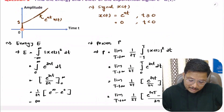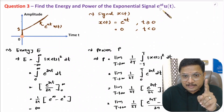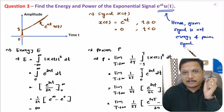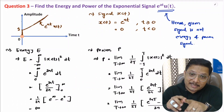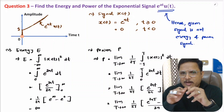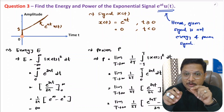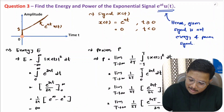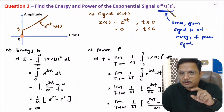This means the given signal e to the power at times u(t) is not an energy signal as well as it is not a power signal. This is a special case in which we don't have either energy or power. There can be a question in a competitive examination asking whether a given signal is energy or power, and one should know this signal is neither energy nor power signal.